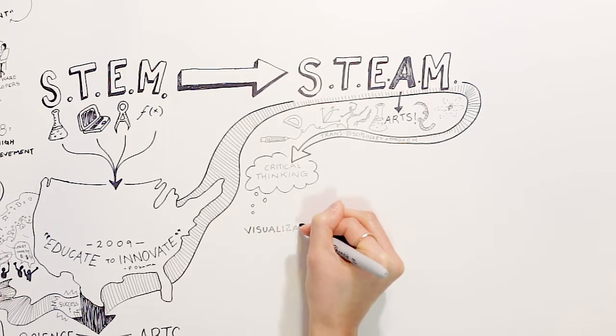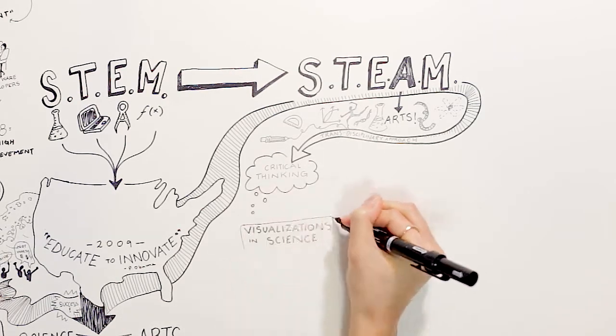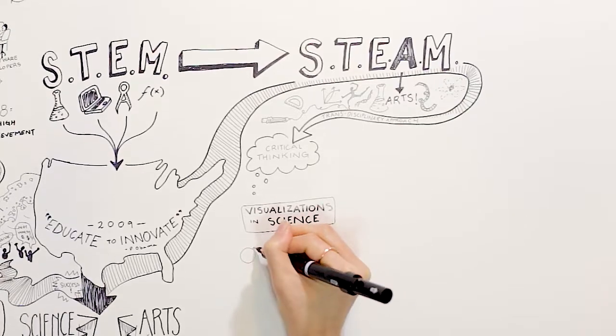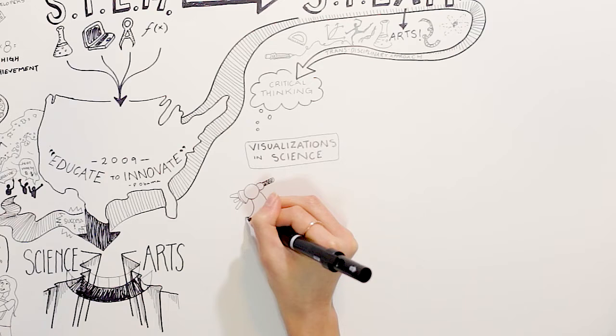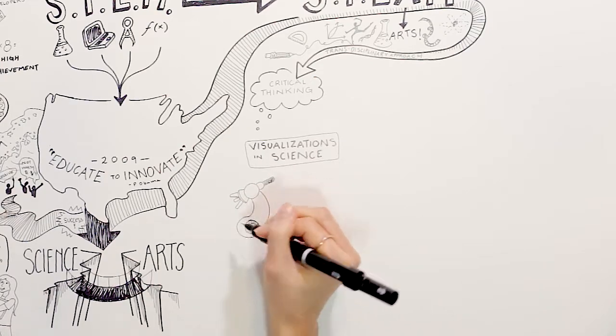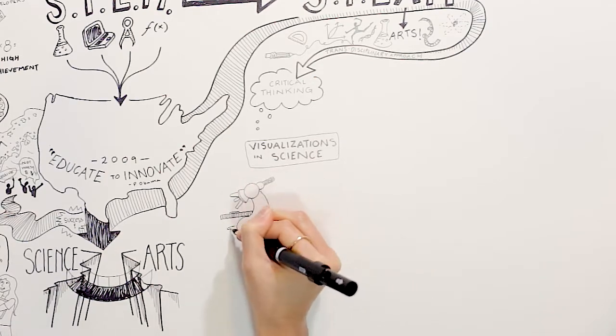For example, visualizations in science are everywhere, from graphs to diagrams, flowcharts to photographs. Scientists both make discoveries based on interpretation of visual representations and communicate their findings in visual formats.